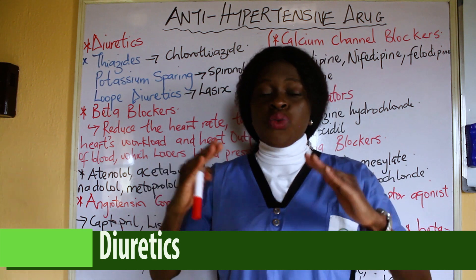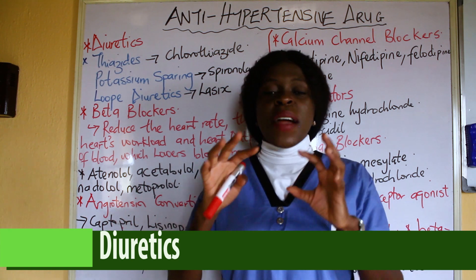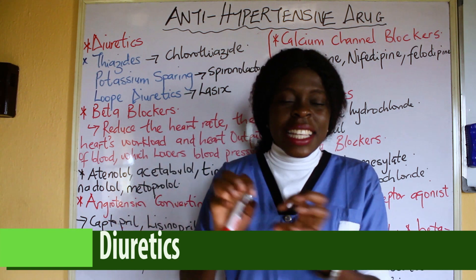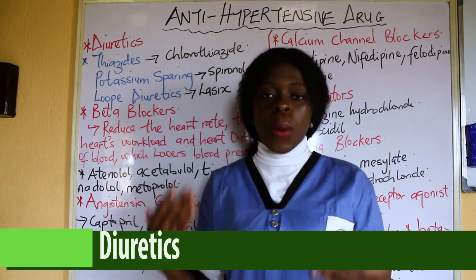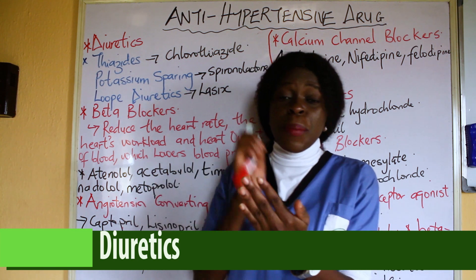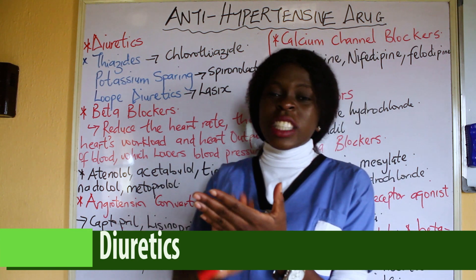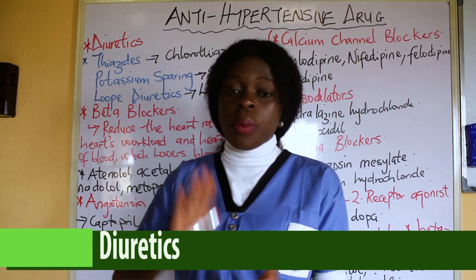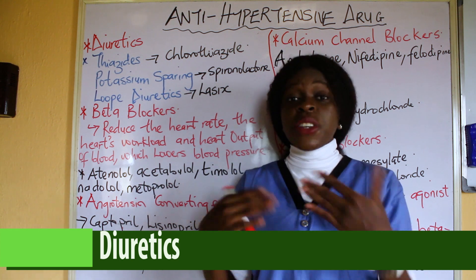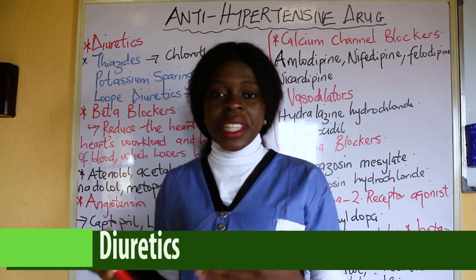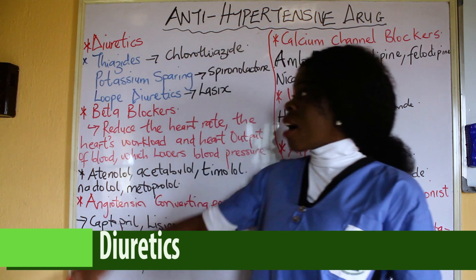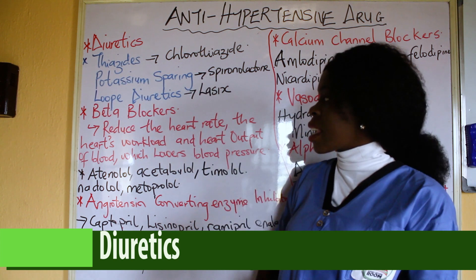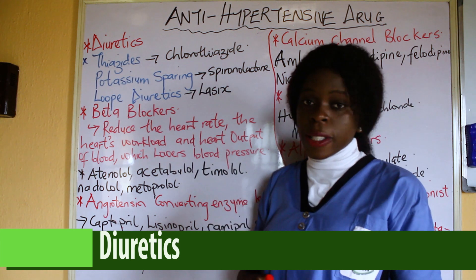The diuretics help to reduce the blood pressure by removing excess water and excess sodium from the body. There are different classes of diuretics: the thiazides, the potassium-sparing diuretics, and the loop diuretics.